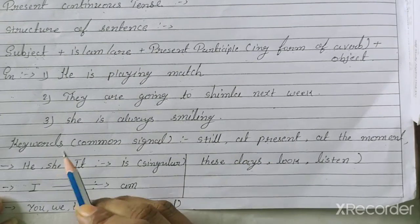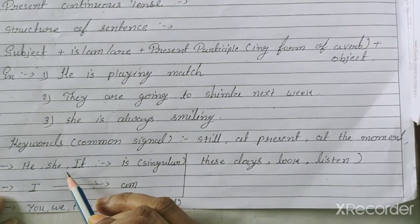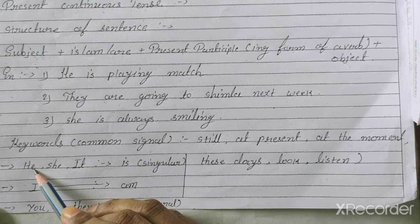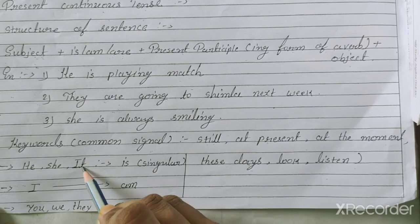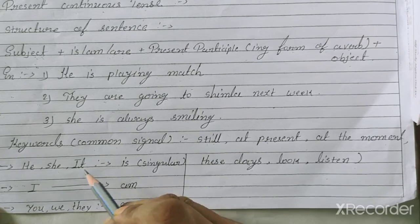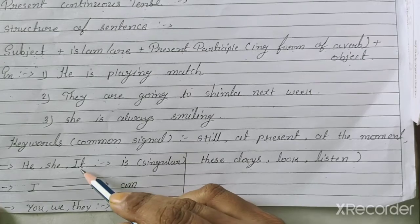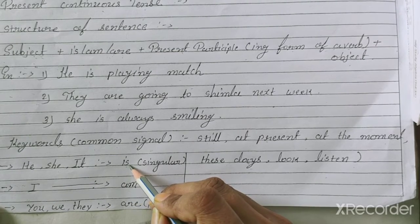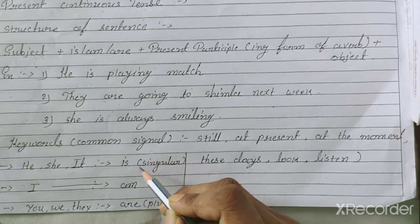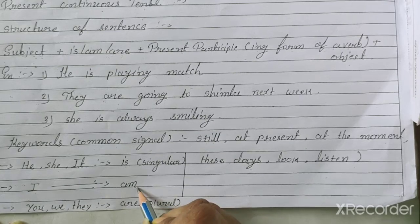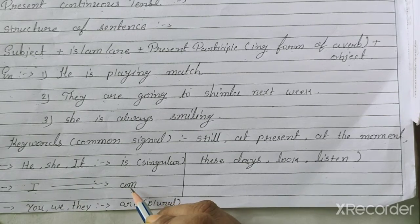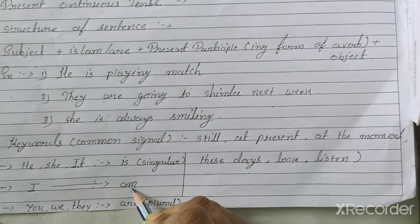He means for a boy, she for girls, it for things and animals. When the subject is he, she, or it — which is singular — we use the helping verb 'is'. When the subject is 'I', we always use 'am' in present continuous tense.